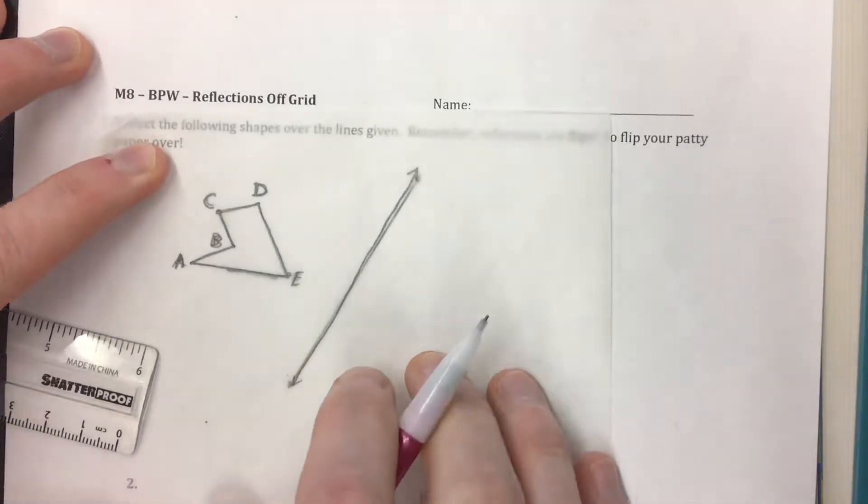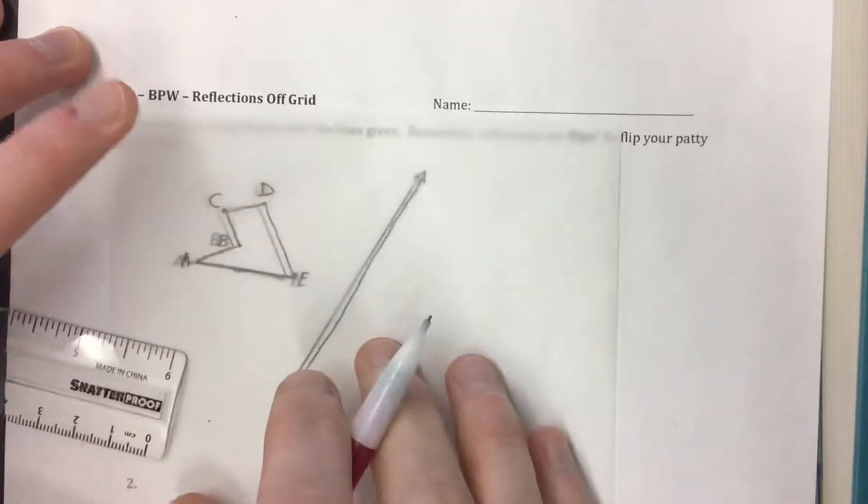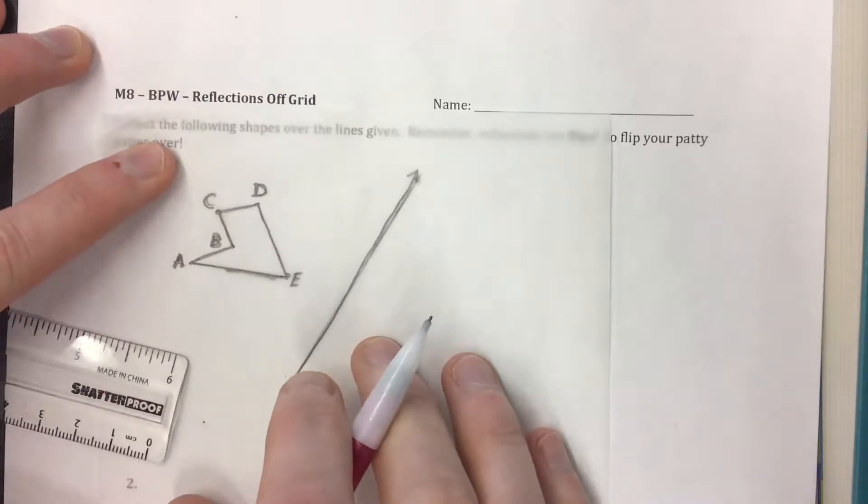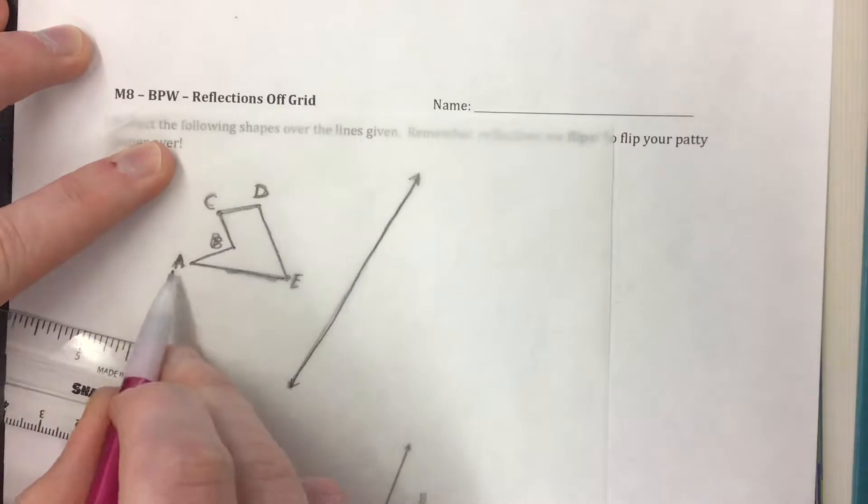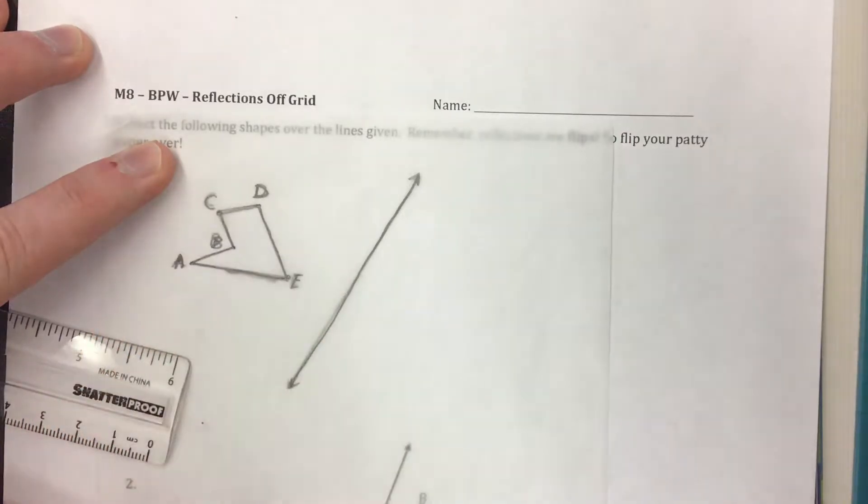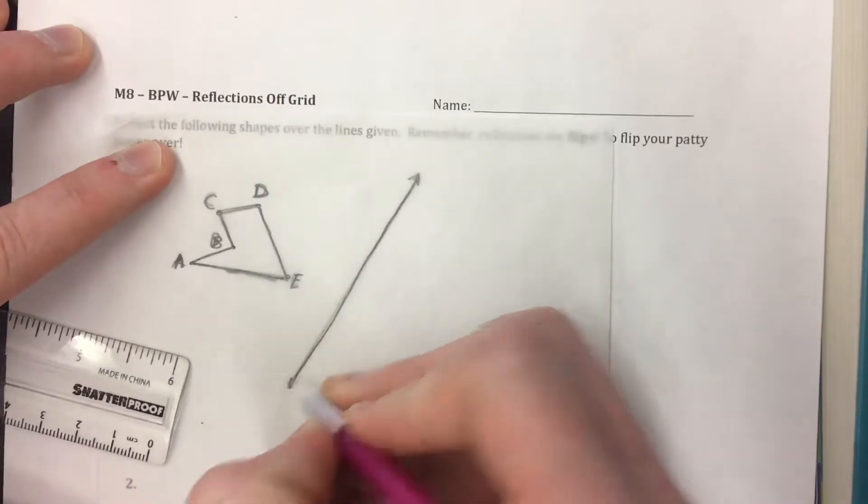We're going to do a reflection off grid. We're going to take this shape, we need to trace it on the patty paper like I've got right here. Make sure when you trace it you trace all the letters as well so you know which one is which and trace the entire length of the line including the arrows on both ends.